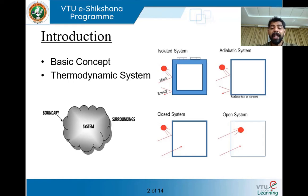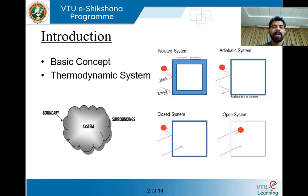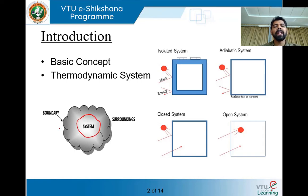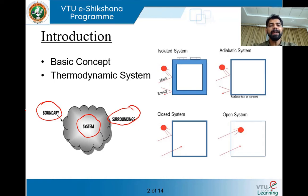It is nothing but a defined volume of space containing a mass in it. The surface of the thermodynamic system forms its boundary. If we consider a cylinder, what is within the cylinder is the system and what is beyond the cylinder is what we call the surrounding or environment. What is there within the boundary is the system, and what is outside the boundary is the surrounding. The system and the surrounding are separated by a boundary.